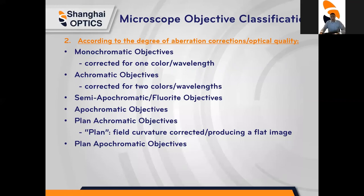According to the degree of aberration corrections and optical quality, an objective may also be classified according to the degree of aberration corrections and optical quality, which includes monochromatic, achromatic, and apochromatic objectives. Monochromatic objective is only corrected for one color and wavelength, whereas achromatic objective is for two colors and wavelengths. The apochromatic objective is corrected for a broad wavelength range, and it is vital so you have the highest quality image.